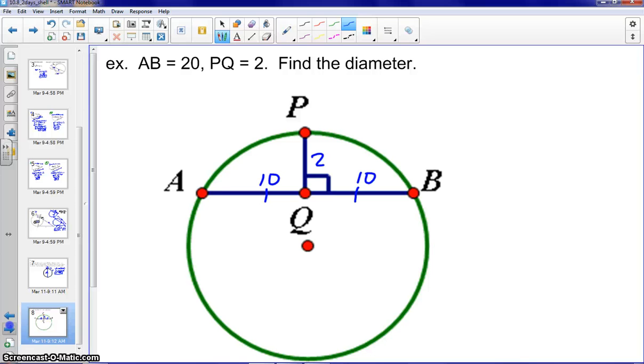So, since we know PQ is perpendicular, and if we extend that, that will extend through the center. And as you can tell, we now have a chord-chord power theorem. So, we can do part times part, 10 times 10, equals part times part, 2 times X. So, when we solve for that, we'll get X to be 50.